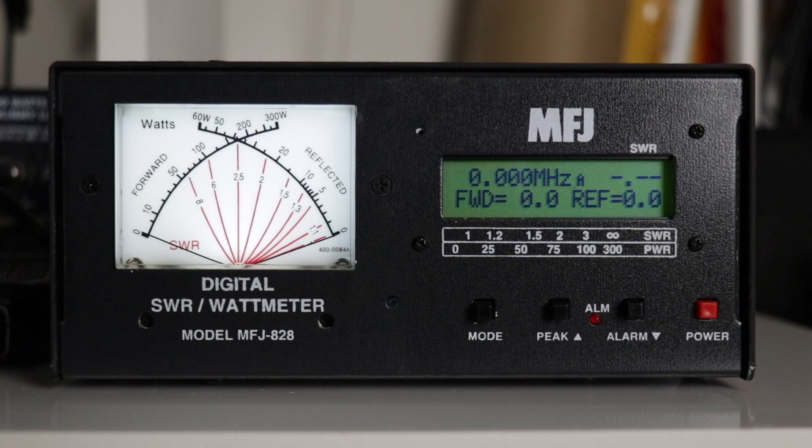The RF power range will go all the way up to 1500 watts and you can set it for four different settings: automatic, 25, 250, or 1500 watts. It has continuous coverage of 1.8 to 54 megahertz.